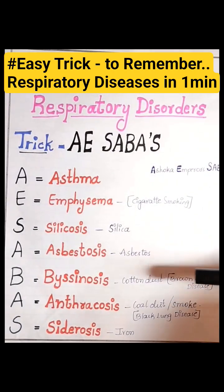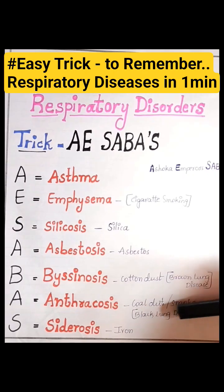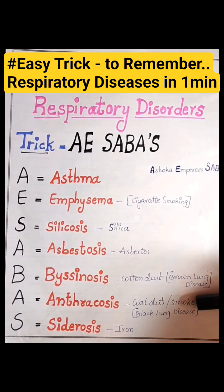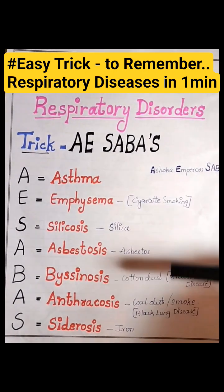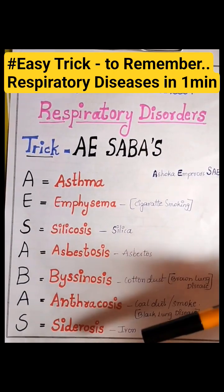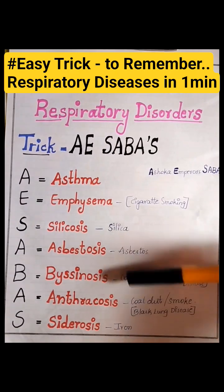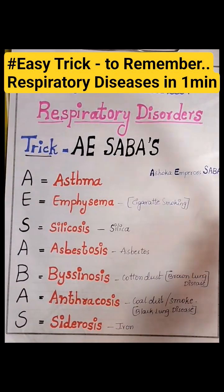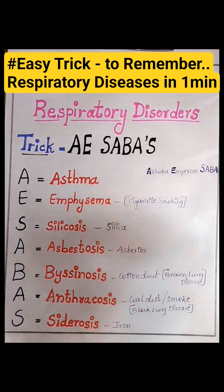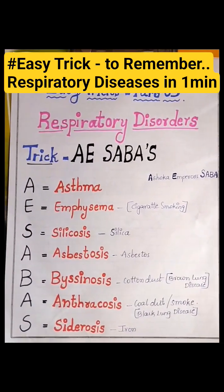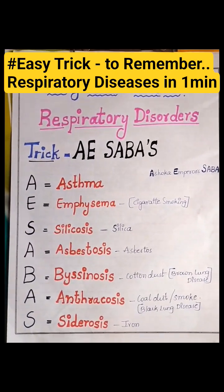Byssinosis is also known as brown lung disease. Anthracosis is caused by coal dust or smoke, and is also known as black lung disease. Siderosis is caused by breathing in iron particles. Thank you.